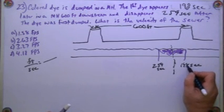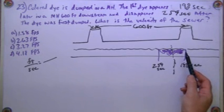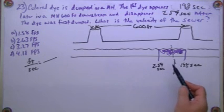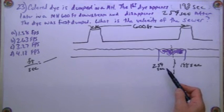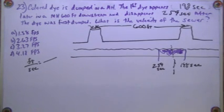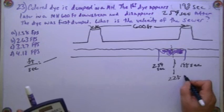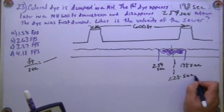So all you've got to do, a couple of ways you can do it. 198 plus 259 divide it by 2, and that's going to give you the middle. 198 plus 259 is 457 divided by 2, which will give you 228 seconds.